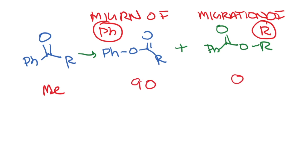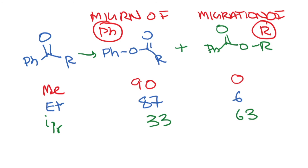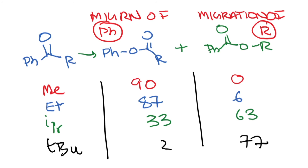With R = methyl, 90% phenyl migration and 0% R migration is observed. With R = ethyl, 87% and 6% respectively. With R = isopropyl, R migration becomes more dominant. With R = tertiary butyl, only 2% phenyl migration and 77% R migration.